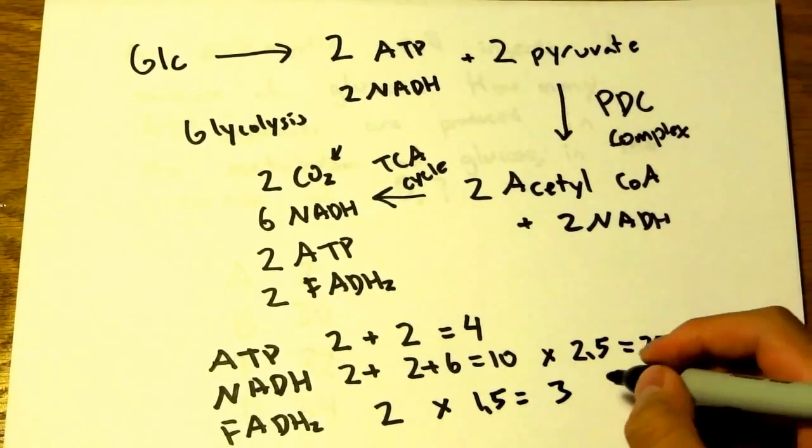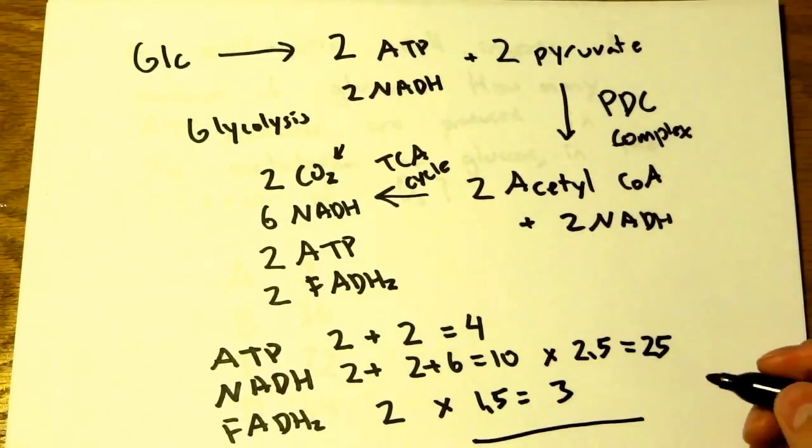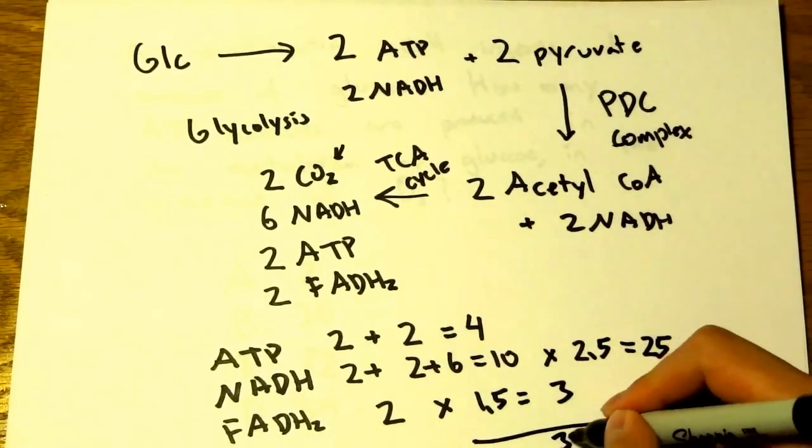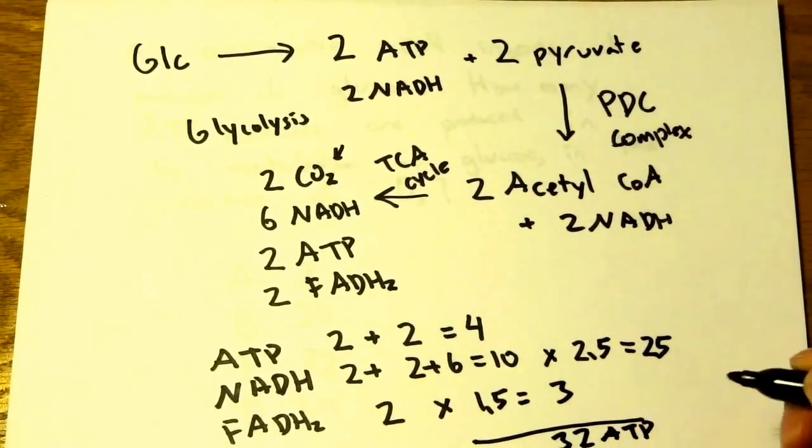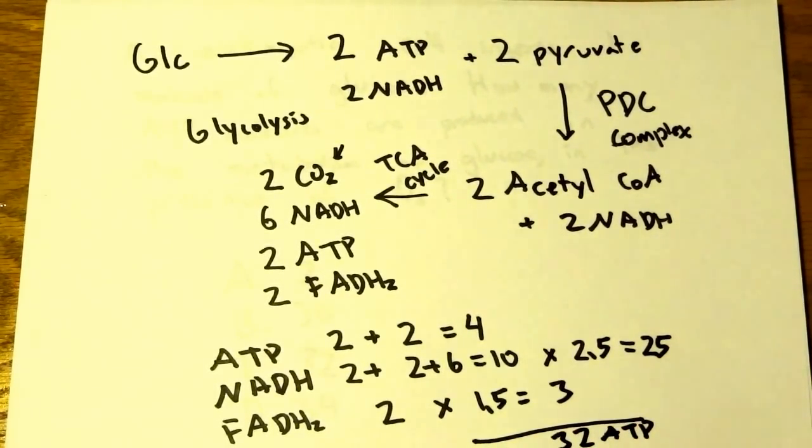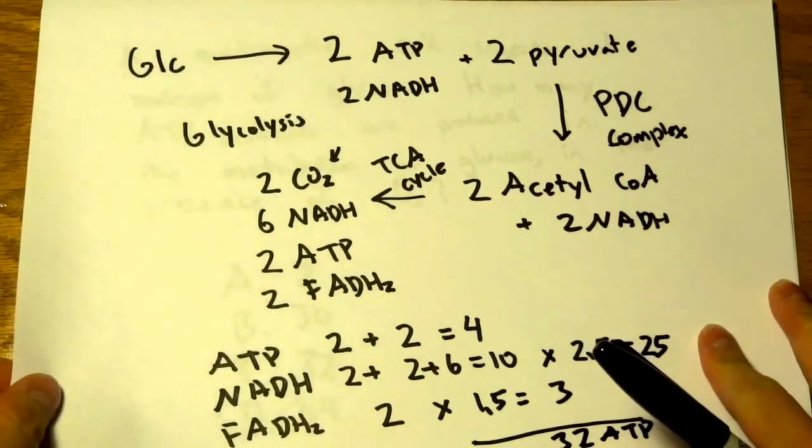If we add these all up, we get 32 ATP. This is for eukaryotic cells. So 32 ATP is our answer.